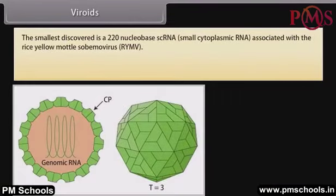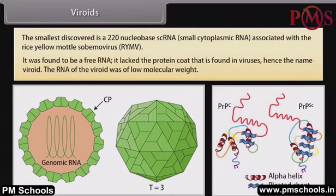The smallest discovered is a 220-nucleobase scRNA (small cytoplasmic RNA) associated with the Rice Yellow Mottle Sobemo Virus (RYMV). It was found to be a free RNA. It lacked the protein coat found in viruses, hence the name viroid. The RNA of the viroid was of low molecular weight.